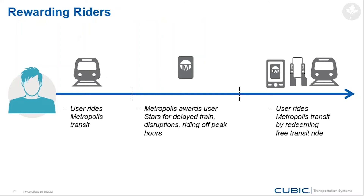The last mechanism is treating this as a typical loyalty program whereby the transportation agency is issuing the points directly. A train is delayed — issue out 100 loyalty points to say you're sorry. Or issue points based off of how much money the person spends on the ticket, or make it distance-based from point A to point B. It's a loyalty platform that we've developed with Cubic Interactive that is very extensible for a transportation agency.